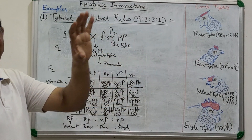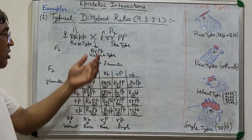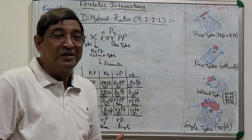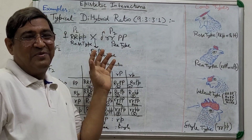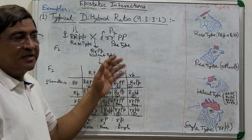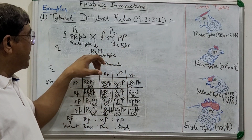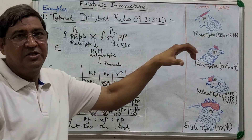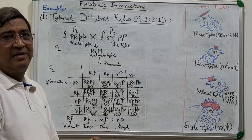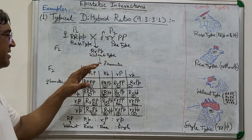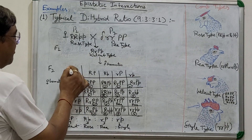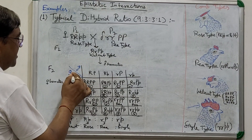Now, in plants you can go for selfing, but here it is not bisexual, so you go for intermating. All F1 progeny are capital R small r capital P small p. When these individuals are intermated, we look at the gametes the males and females are producing.